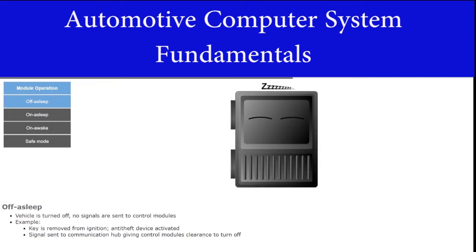Off asleep mode occurs when the vehicle is turned off and no signals are being sent from other control modules. A control module will be in off asleep mode when the key is removed from the ignition and the anti-theft device is activated, or when a signal is sent to the communication hub giving the control modules clearance to completely turn off.